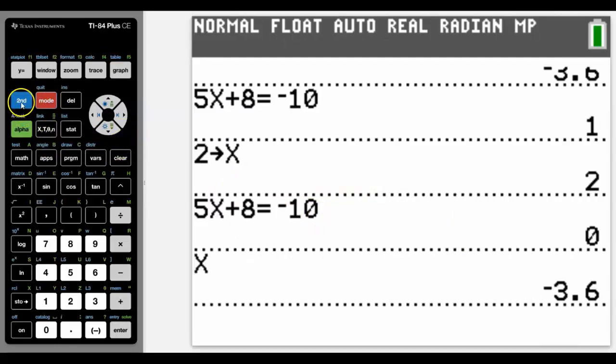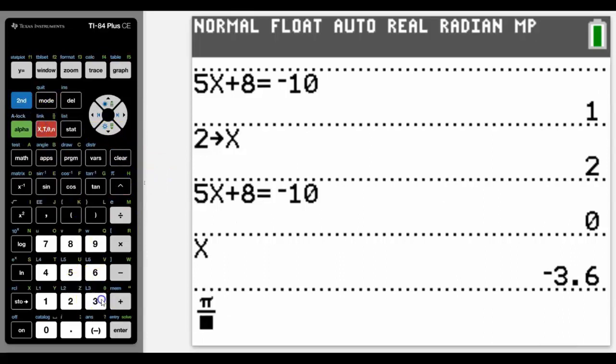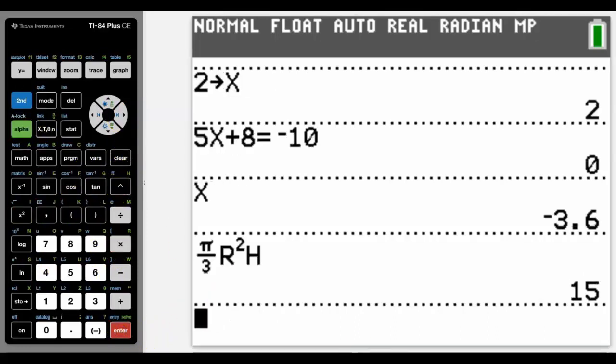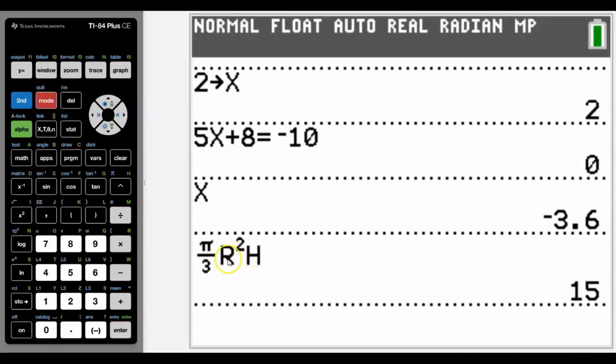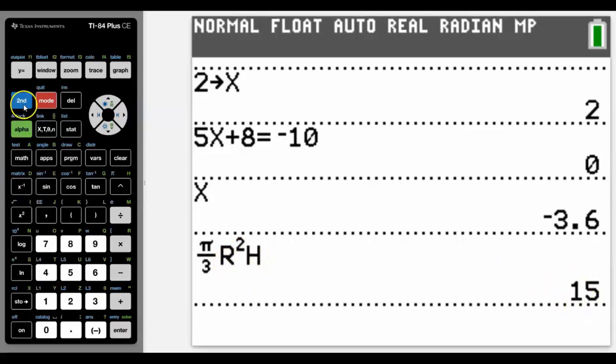We could test that because, as I said to you, if we go back into normal calculator screen now, those values will actually be stored as r and as h. So if we actually use them both it should give us an answer of—yes, 15. Brilliant.